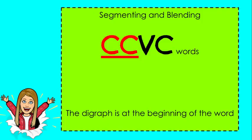Now we're going to practice C-C-V-C words. Now our two consonants are at the beginning making one new sound. Then we'll have a short vowel sound followed by another consonant. Now the digraph will be at the beginning. Here we go.